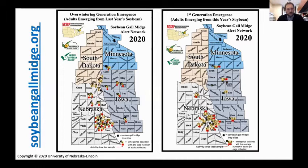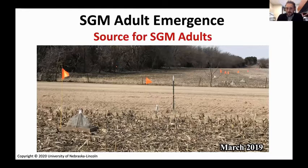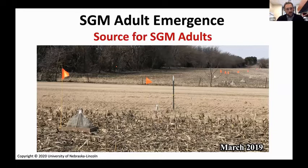If you go to that webpage and click 'Join the Alert Network,' we'll add you to the network. On the website during the season you'll see two separate maps: one is the overwintering generation — that's the adult emergence from last year's soybean fields, and this is the one where a lot of the tactics are based. The other map tracks first and second generations from this year's soybean field. At that point in the season, we're not looking at a lot of viable management strategies anymore.